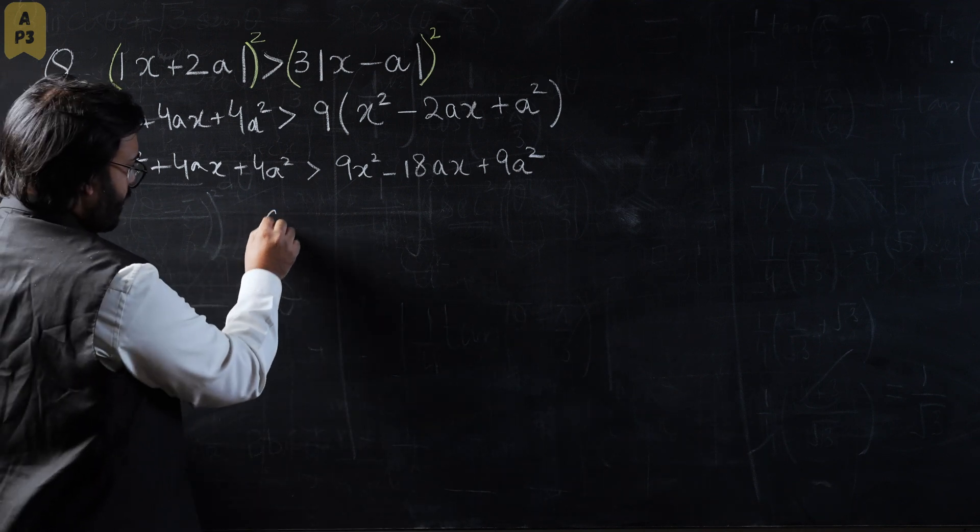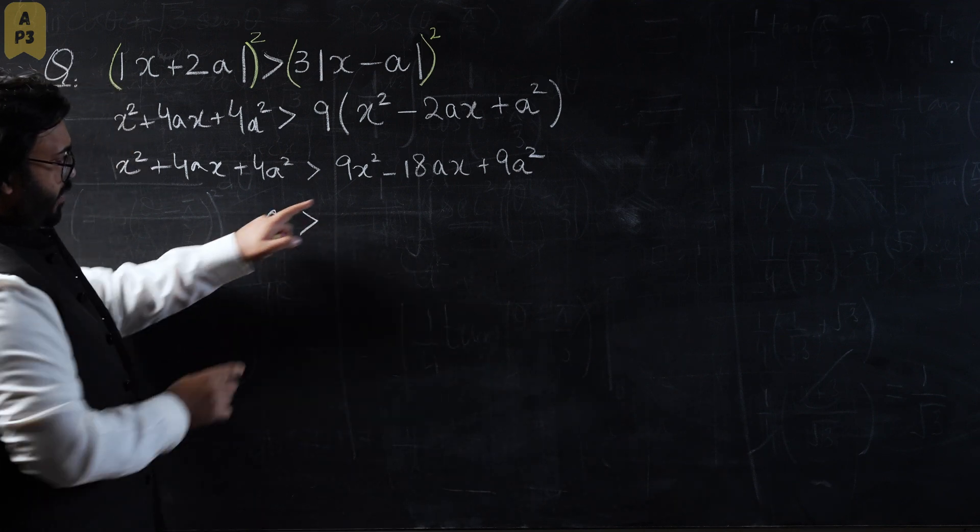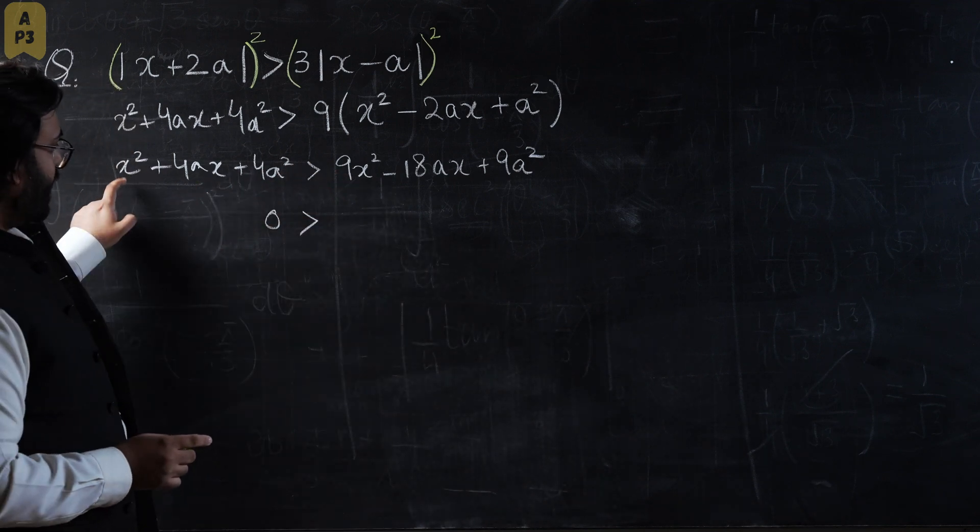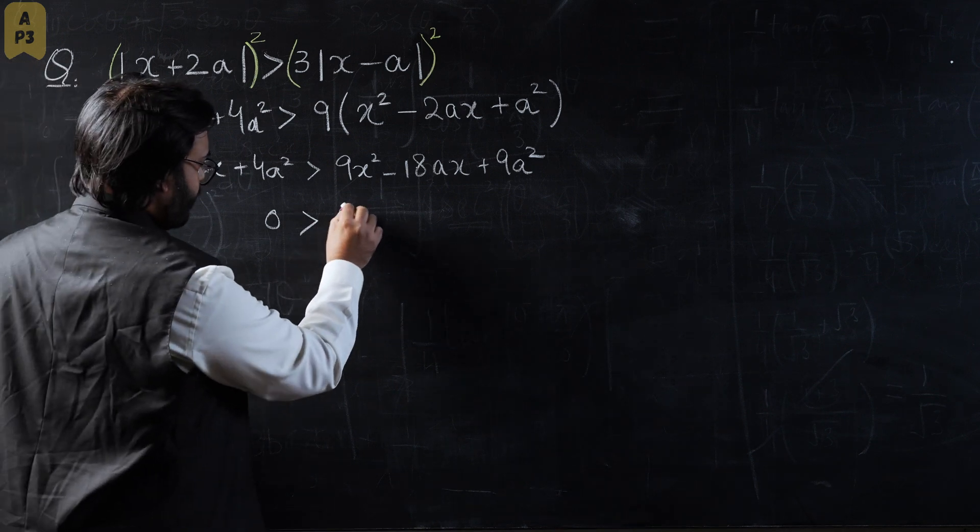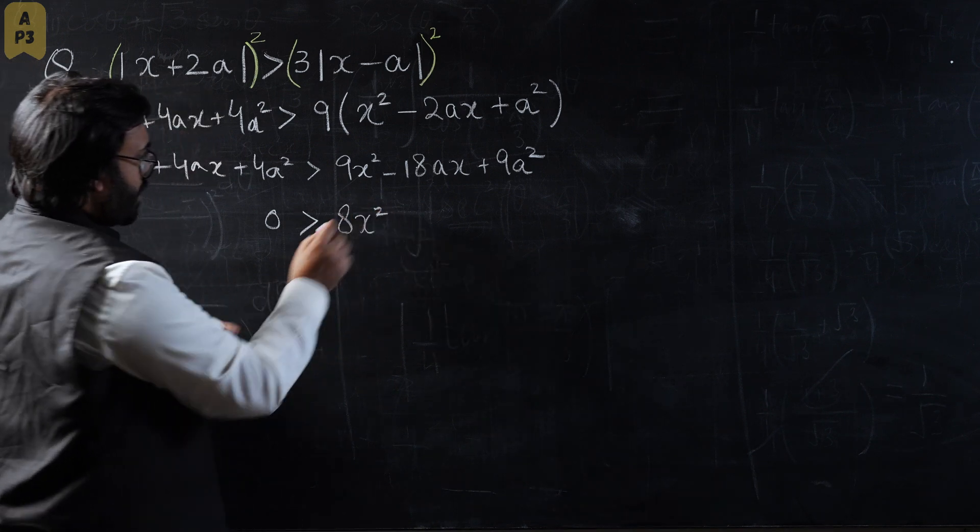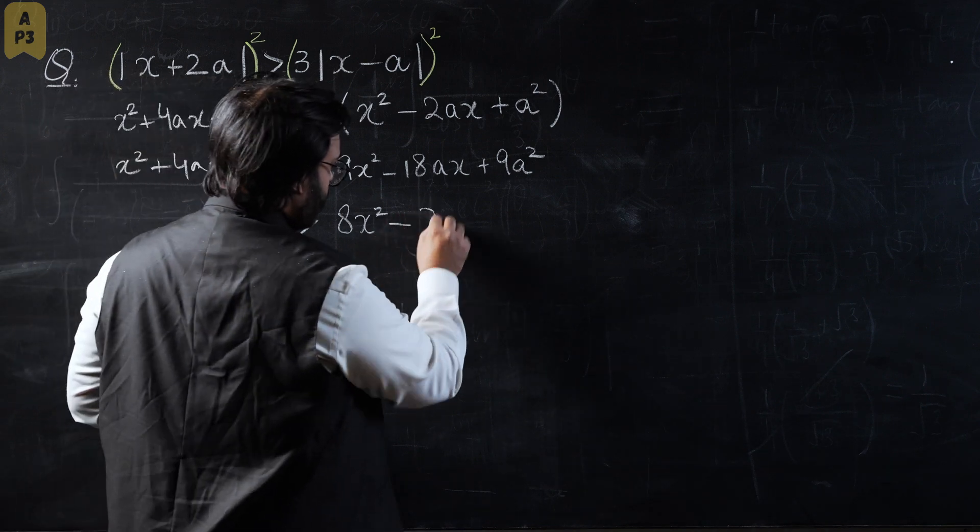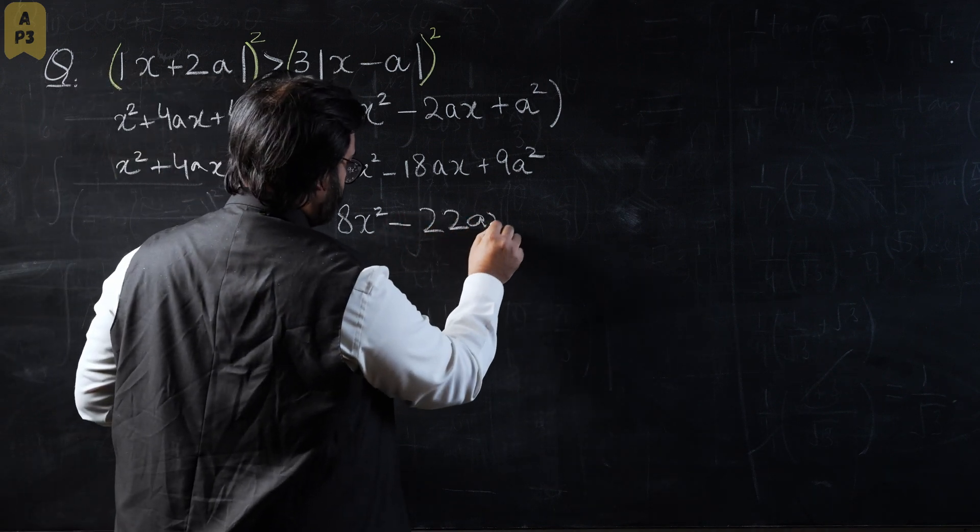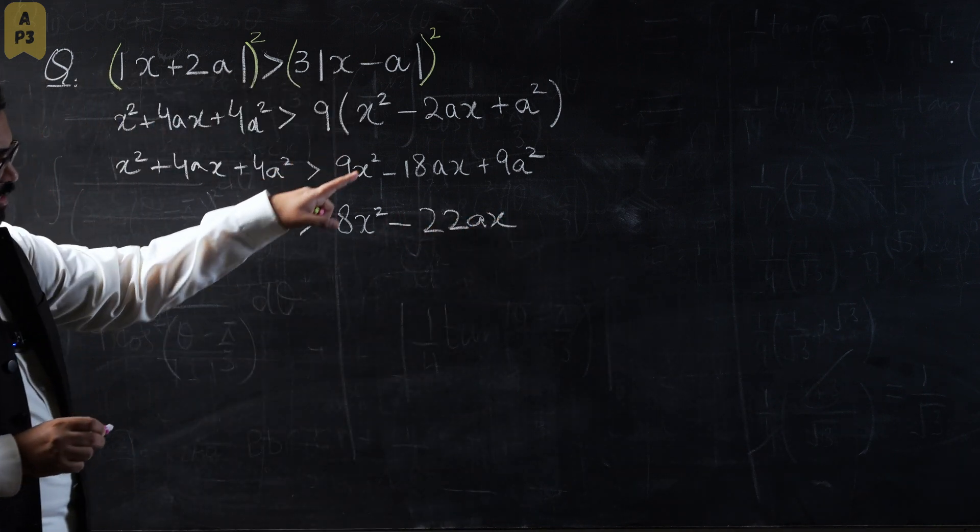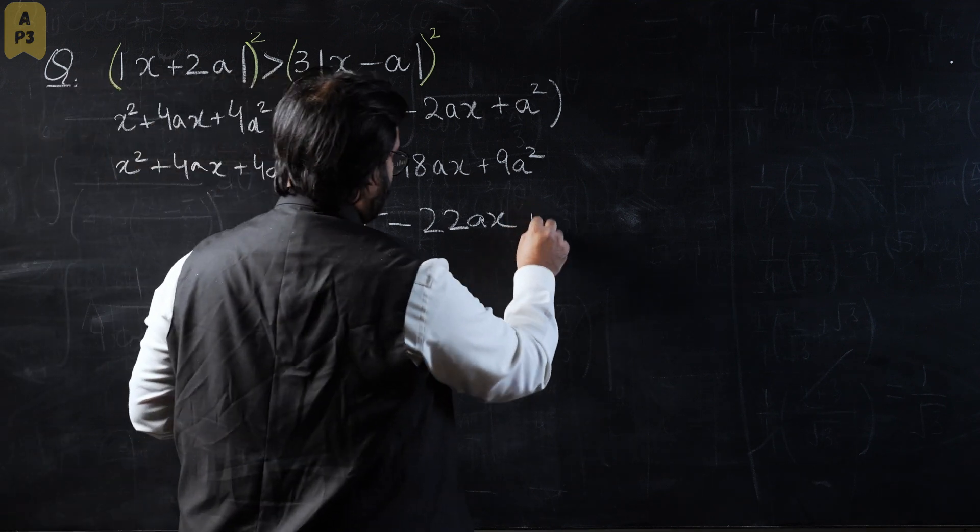Now I'm going to bring everything to the right-hand side. If we calculate, 9x squared minus x squared will be 8x squared minus 18ax minus 4ax, which gives us minus 22ax, and 9a squared minus 4a squared gives us 5a squared.